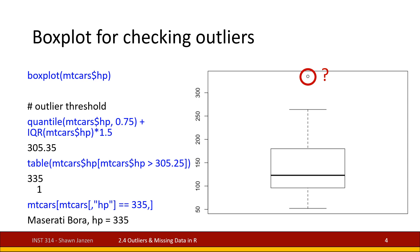I've put a red circle with a question mark flagging what's out there. To figure out what's past the box and whiskers, we use a couple of functions — this is called the outlier threshold. You take the upper quantile — what's the number value at the end of that box — and we're looking at horsepower at the 0.75, i.e., the 75th quantile. Then add the IQR value times 1.5. That gives us a flagged number of 305.35, meaning anything larger than 305 is considered an outlier. Filtering mtcars horsepower greater than that threshold of 305 returns one value: 335.